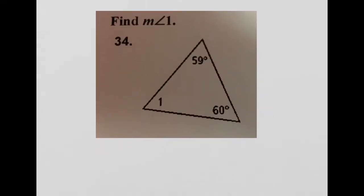So on problem number 34 they want me to find the measure of angle 1. Well, I know that the measures, the sum of the measures of the angles of a triangle all add together to be 180 degrees.